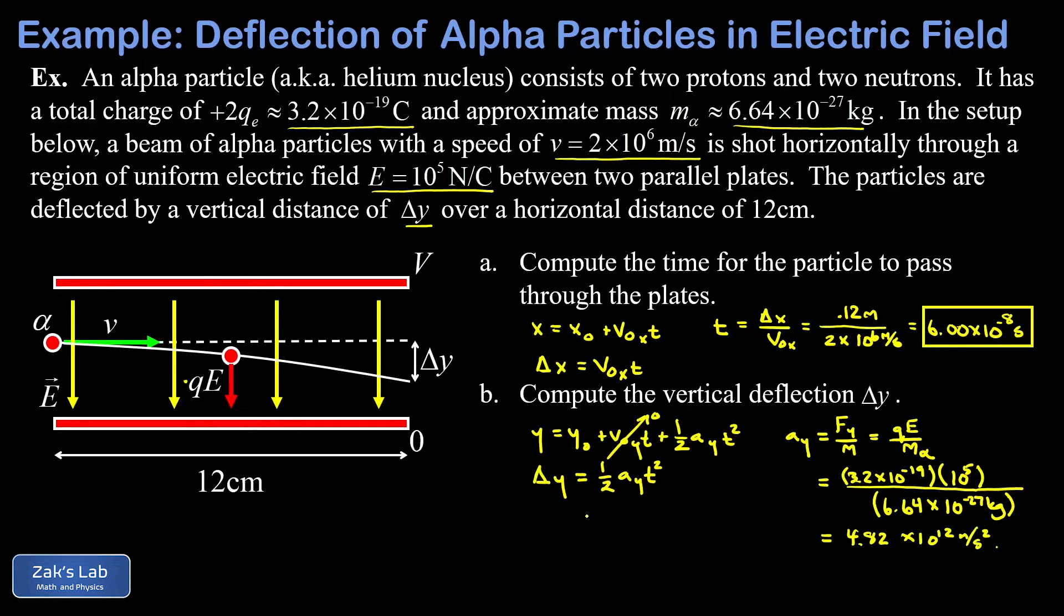Now we can go back to our calculation of the vertical deflection, delta Y, and we can plug in that acceleration. And because that acceleration points downward, it's most correct to keep a minus sign on that. But really, I think the usual interpretation of this problem would be what's the magnitude of that deflection, delta Y. So I'm not going to write the minus sign in this.